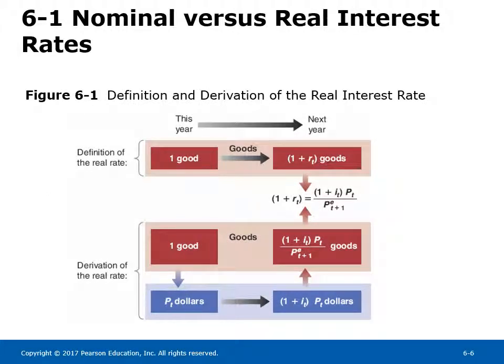Figure 6-1 shows the definition and derivation of the real interest rate. If you loan money today in terms of goods — say a cup of rice — then after one year you get back a little over one cup of rice. The extra rice is the real return on your loan. One good today is after one year equal to 1 plus R_T goods. To derive the formula, start by considering you invested in one good by buying it for its price P_T. After a year, if the nominal interest rate is I_T, you have P_T times (1 + I_T) dollars. After one year the price level will be P_{T+1}. Adjusting the nominal return by dividing by the new price level gives the real return — the real interest rate earned on the investment.